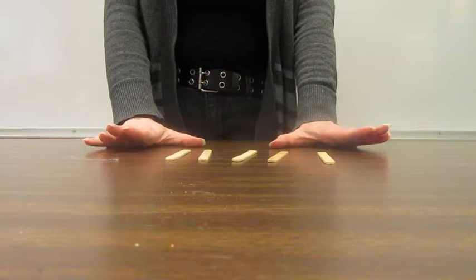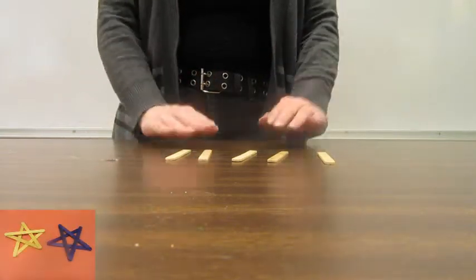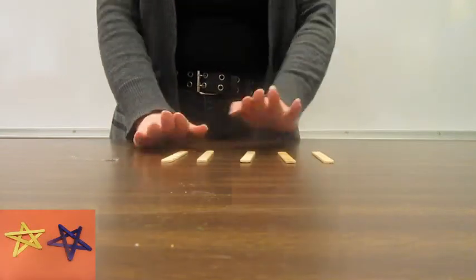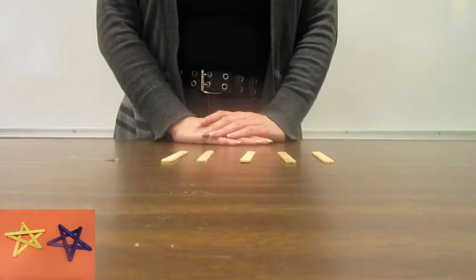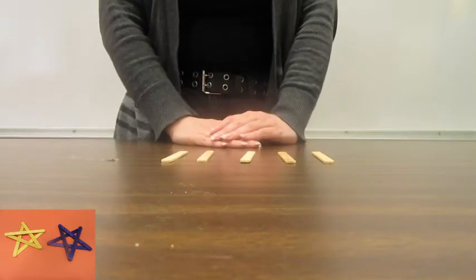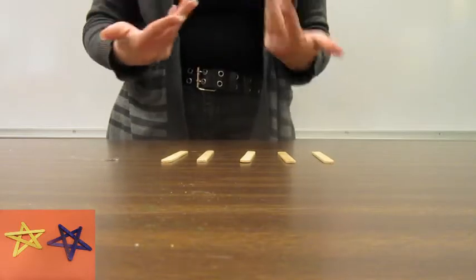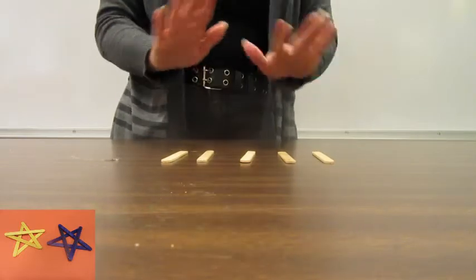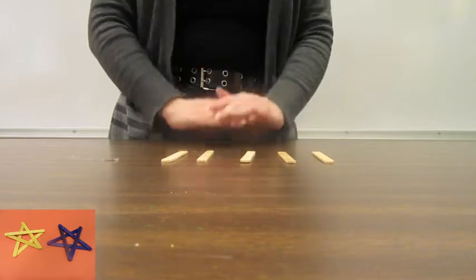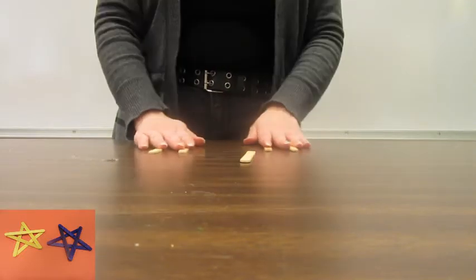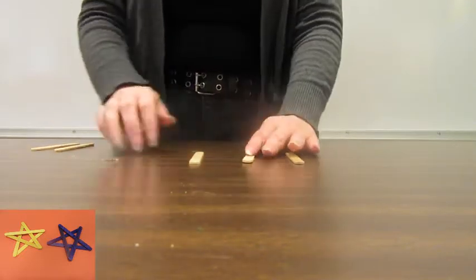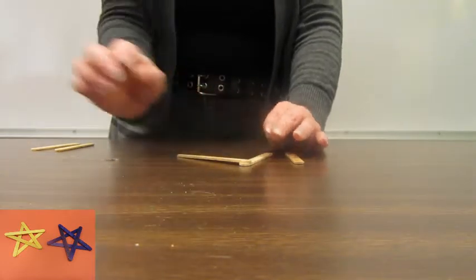For our next craft, we are going to be making a star. What you need for this is five sticks. I like regular size ones for this, and some glue. Now, with this one, you may want to paint your sticks ahead of time or use pre-painted sticks if you want to make them a different color. You can paint it when you're done, but maybe a little more tidy if you do it beforehand.